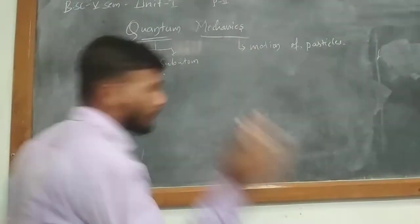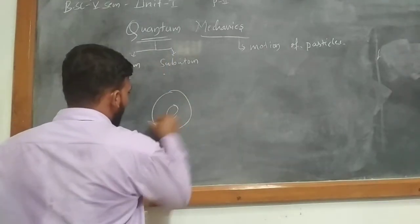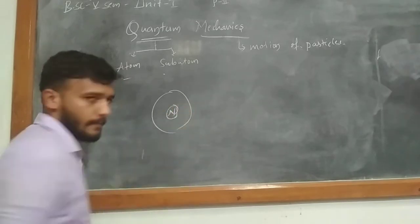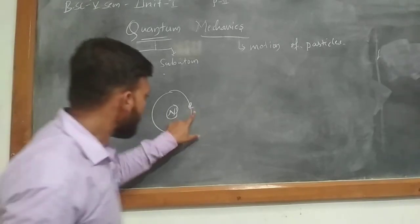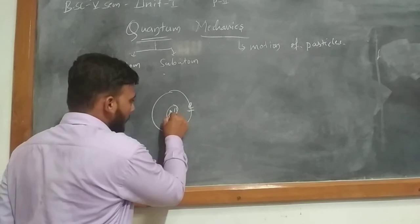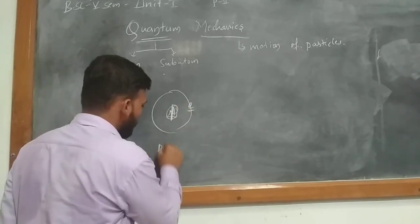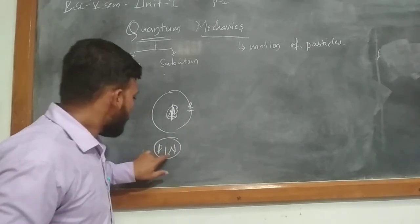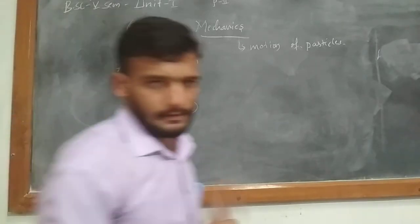In the atom, all of us know that sub-atoms are within the atom. In the middle you have to take the nucleus. Surrounding the nucleus, electrons are revolving. And in the nucleus, two parts are present: protons and neutrons. So protons, neutrons, and electrons — these three are the sub-atomic particles.